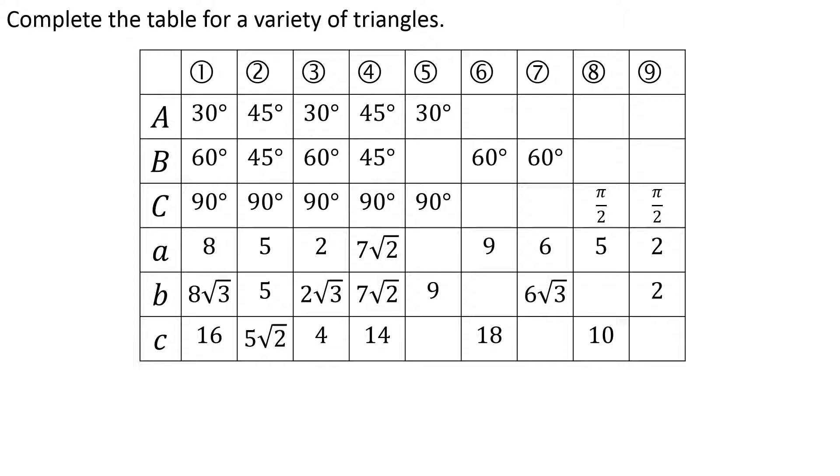30-60-90 right triangle. If I know the long leg to get the short leg I divide by √3. 9 divided by the square root of 3 will get me 3√3. Of course if I double that to get the hypotenuse, 6√3.